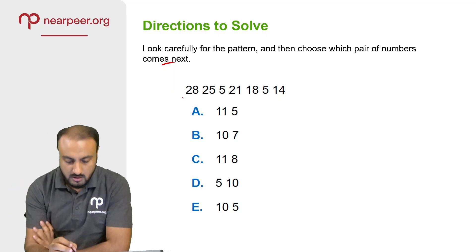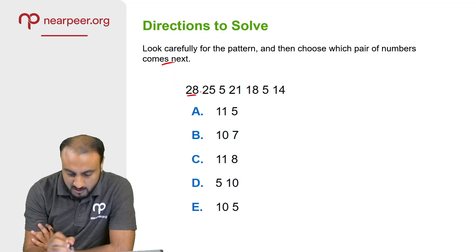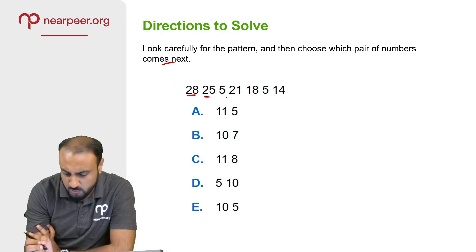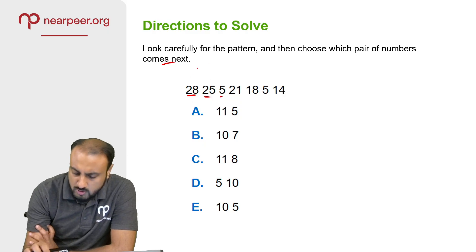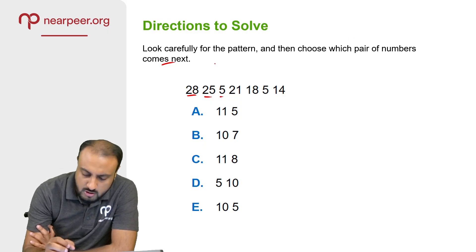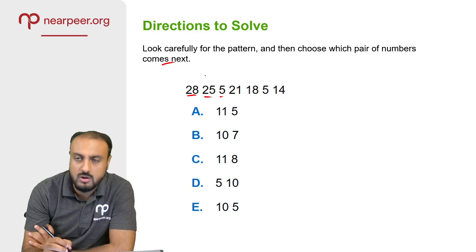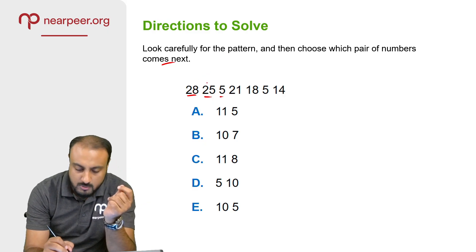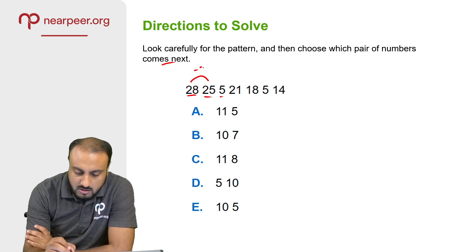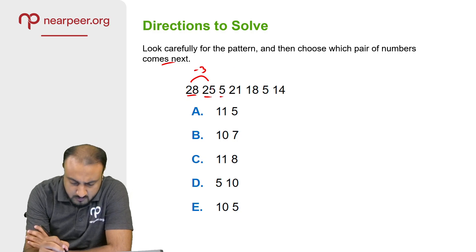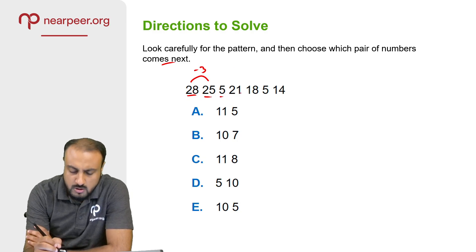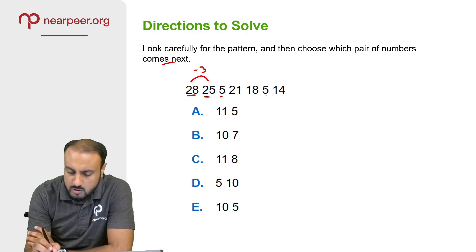First of all, we have the number 28, then 25, and then 5. Between 28 and 25 we have a relation: 25, 26, 27, 28 — so we have minus 3. 28 minus 3 equals 25. Then between 25 and 5 we have a pattern again — so 5 again appears here.